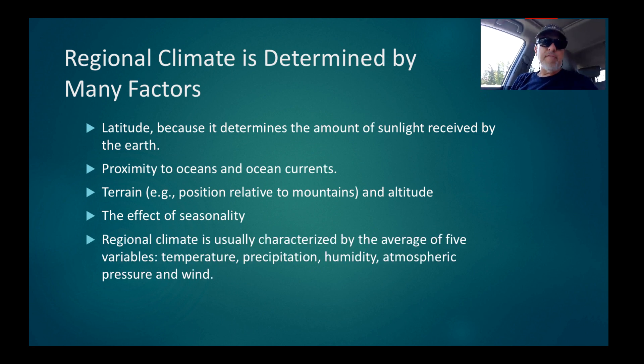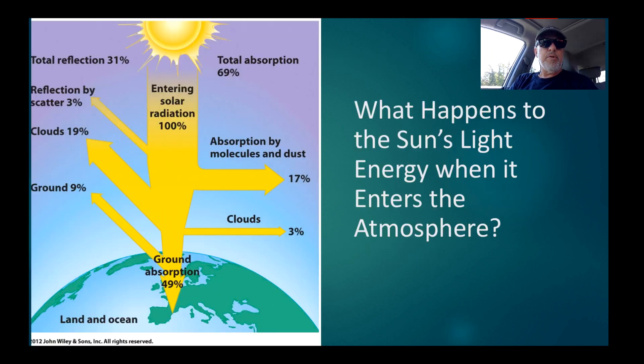Regional climate is usually characterized by five variables: temperature, precipitation, humidity, atmospheric pressure, and wind, average wind speed. I bet you could have guessed them all if you tried. So let's look at some of these.